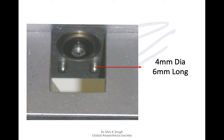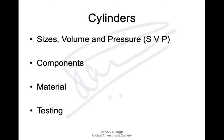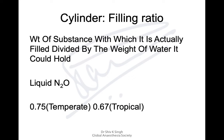Cylinders are important and you need to know their sizes, volumes, pressures, materials, and testing procedures — important for examination purposes. For liquid nitrous oxide you need to know the filling ratio: the weight of substance it is filled with relative to the weight of water it could hold. In temperate climates this is 0.75, while in tropical climates it is 0.67, because higher temperatures more easily convert liquid nitrous oxide to gaseous form.